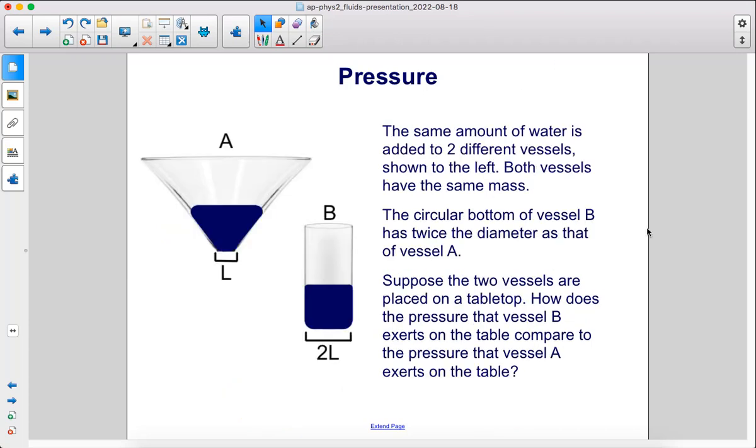The same amount of water is added to two different vessels shown to the left. Both vessels have the same mass. The circular bottom of vessel B has twice the diameter as that of vessel A. Suppose the two vessels are placed on a tabletop. How does the pressure that vessel B exerts on the table compare to the pressure that vessel A exerts on the table?